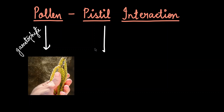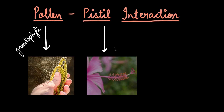Pistil represents the female part of the flower and it has three parts. This part is the stigma. Then this elongated region is called the style. And at the end of the style, we have a bulb-like structure called the ovary.